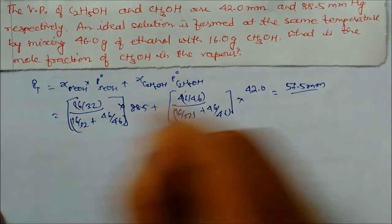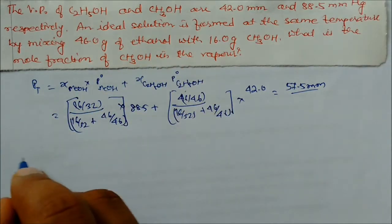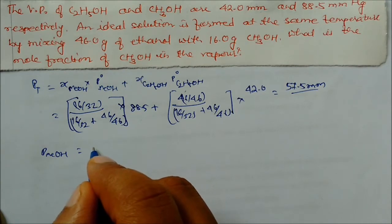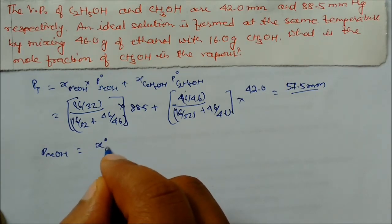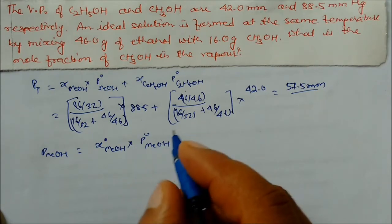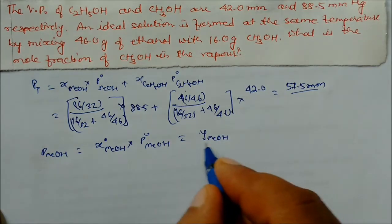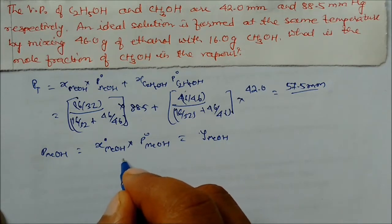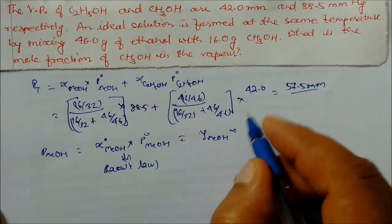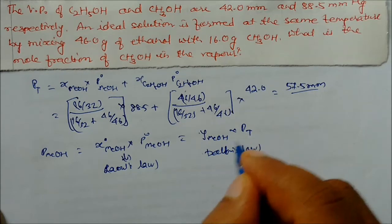On solving, we get the total pressure as 57.5 mmHg. Now to find the mole fraction of methanol in the vapor phase, we apply Dalton's Law — not Raoult's Law — since we are now working in the vapor/gas phase. The partial pressure of methanol equals mole fraction of methanol in vapor times total pressure.